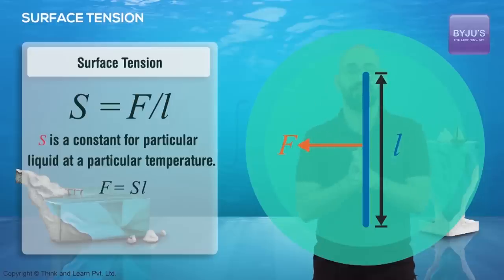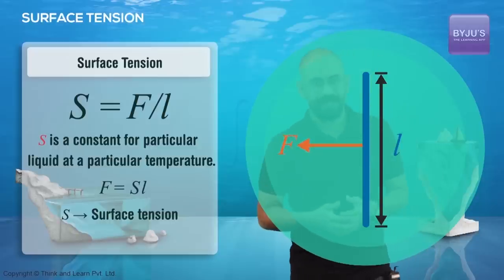And again that constant is constant for a particular fluid at a particular temperature. Now that constant is called the surface tension of this fluid, that constant S. Now one thing to note here is that this phenomenon of stretching of the fluid, the fact that the fluid becomes something like a stretched membrane is also called surface tension. And this quantity F by L is also called surface tension.